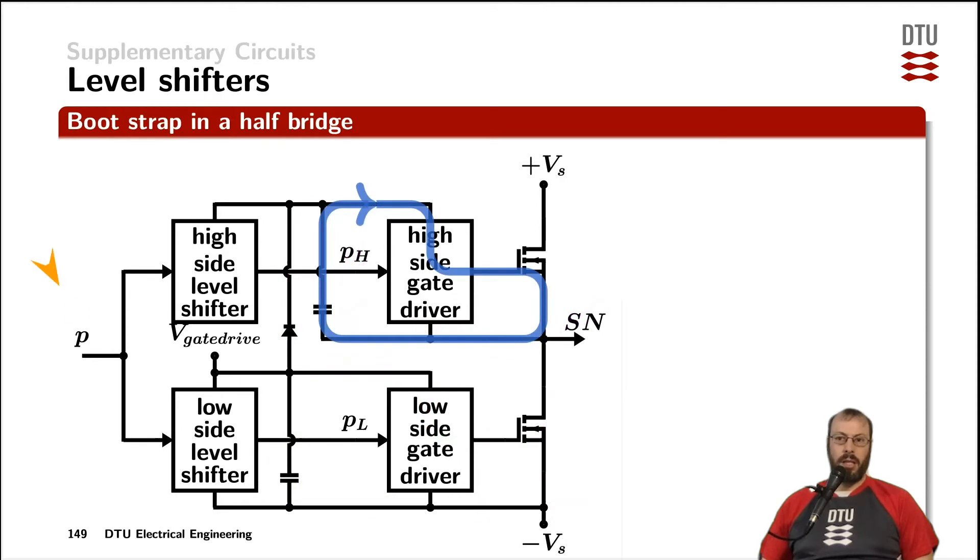So now when the pulse signal here switches, the low side level shifter tells the low side power device through the low side gate driver to turn off, and simultaneously the pulse signal is shifted through the high side level shifter and turns on the high side power device through the high side gate driver. And in this case, the upper device in the totem pole stage here is charging the gate source of the high side power MOSFET.